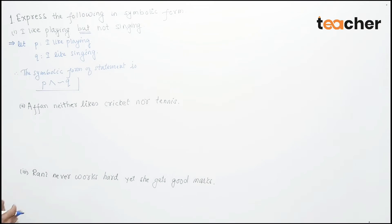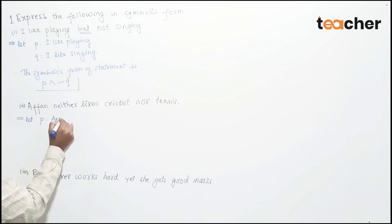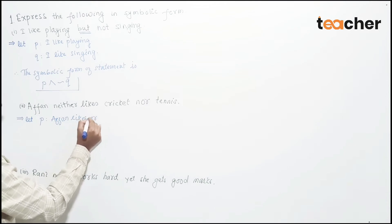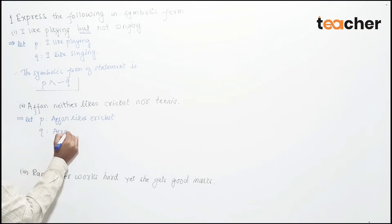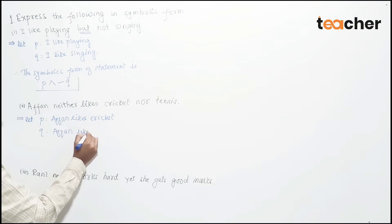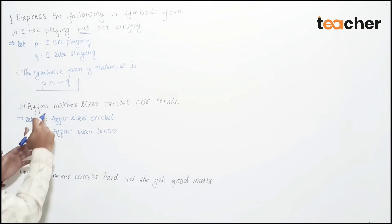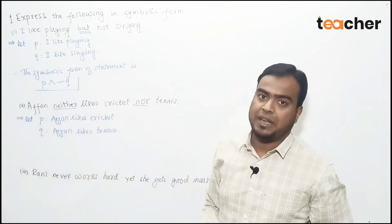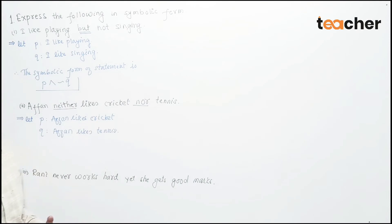Now the second example: 'A fan neither likes cricket nor tennis.' Here 'neither nor' means both statements are negative. Let P be the statement 'I like cricket' and Q be the statement 'I like tennis.' The phrase 'neither nor' involves or-type logic — we will use disjunction as the connective.